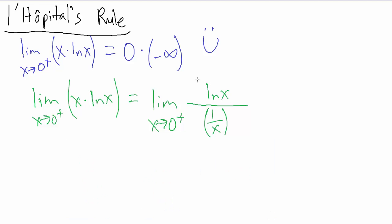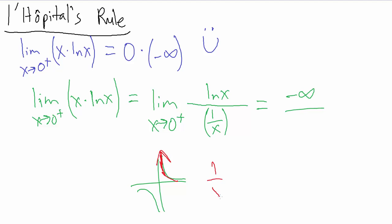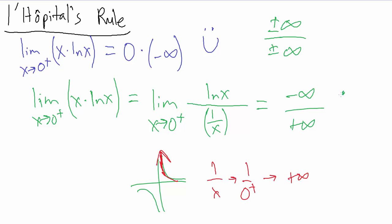This is one of those cases where we do something that looks a bit goofy. Now let's try direct substitution again. Natural log of x goes to negative infinity. And for 1 over x — if we graph it, as x approaches 0 from the positive side, 1 over x goes to positive infinity. So what we have is negative infinity over positive infinity, which is indeed one of our indeterminate forms — plus or minus infinity over plus or minus infinity. That makes us very happy, because now we can use L'Hôpital's rule directly.